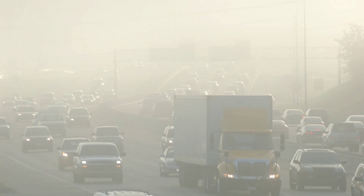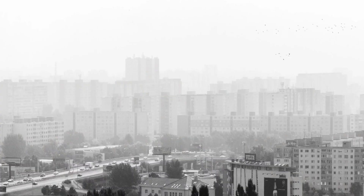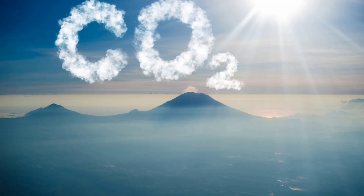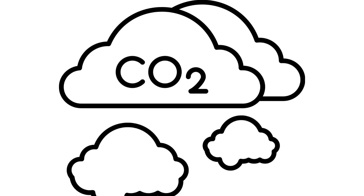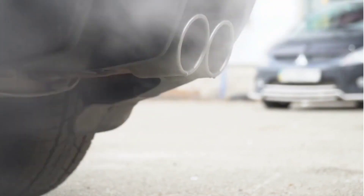There are a number of things we can do to reduce smog, both as individuals and as a society. As individuals, we can use our cars less and choose to walk, bike, or use buses and trains more often. We can also use less energy at home by turning off lights and appliances when not in use, and by weatherizing our homes to make them more energy efficient. We should avoid using gasoline-powered lawnmowers and leaf blowers.